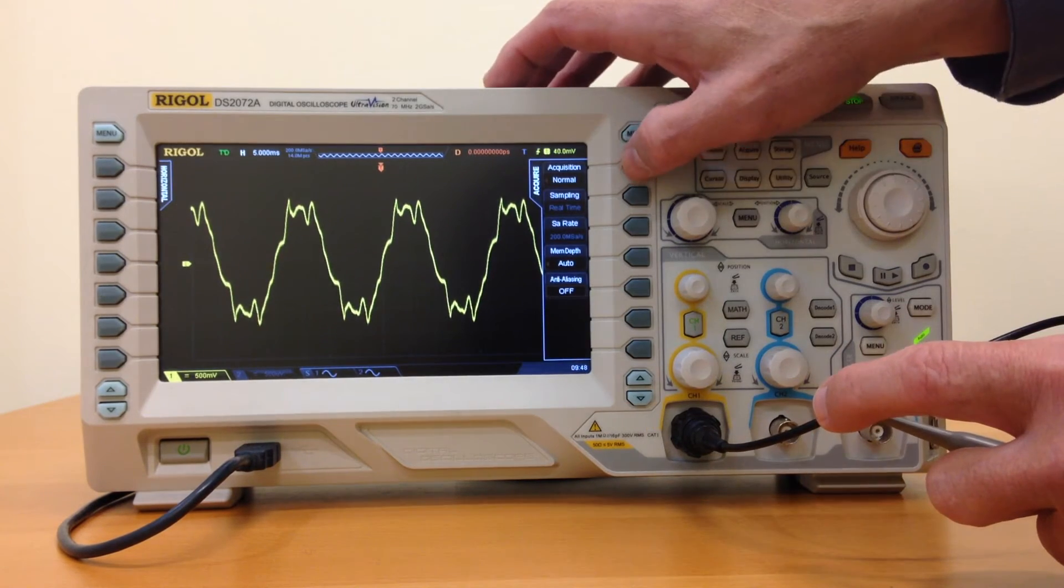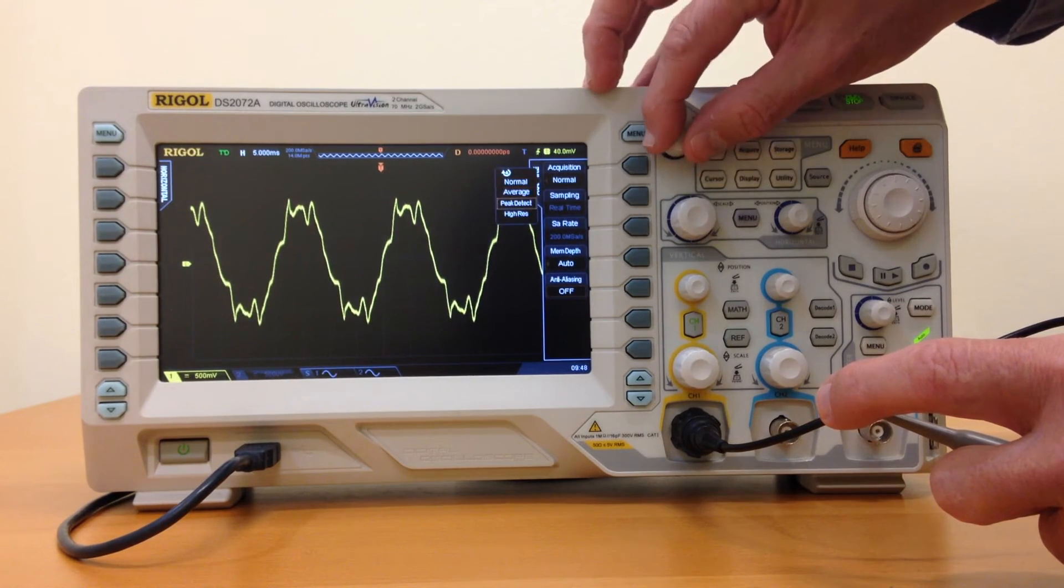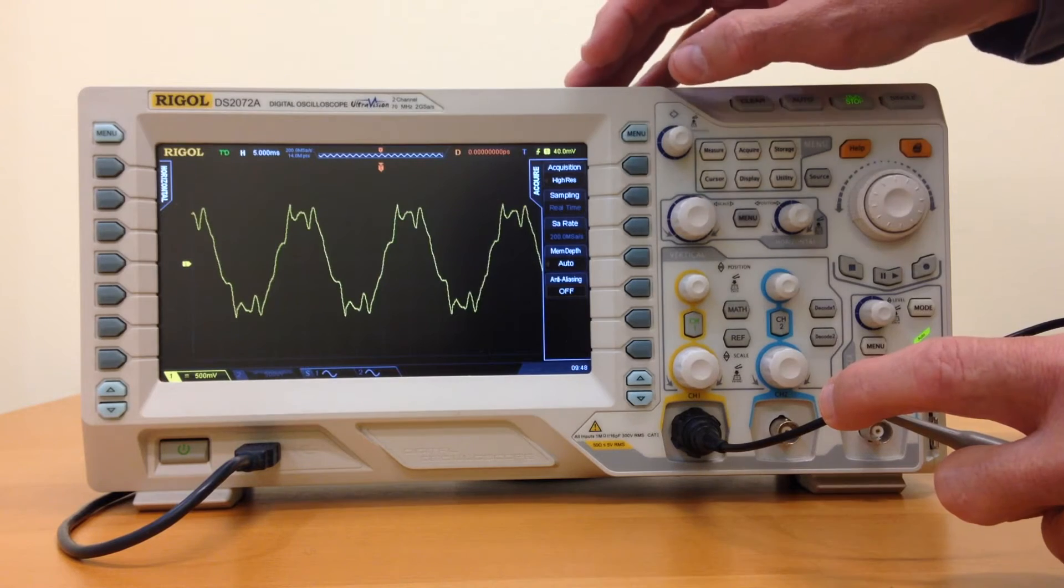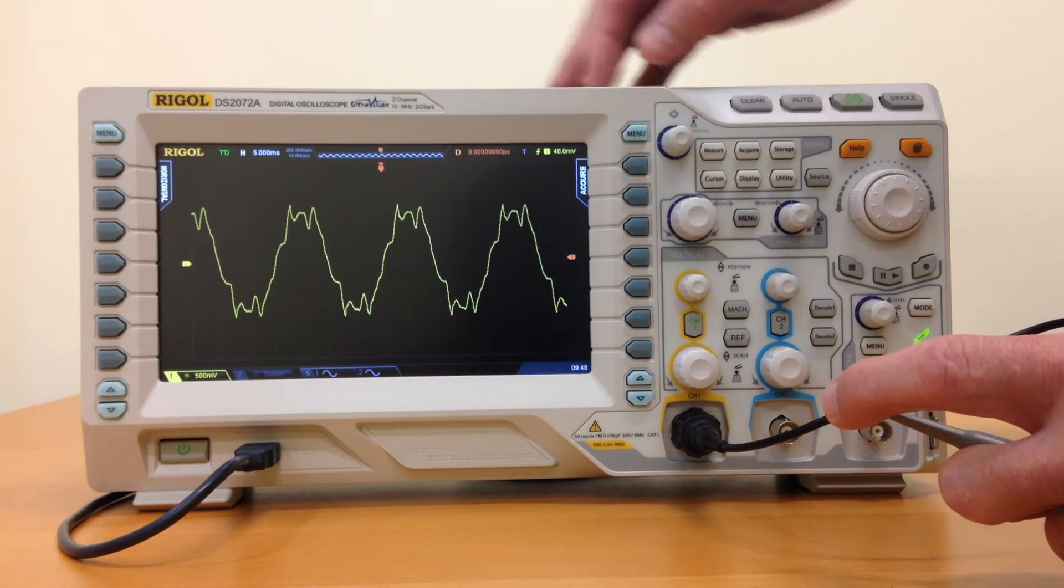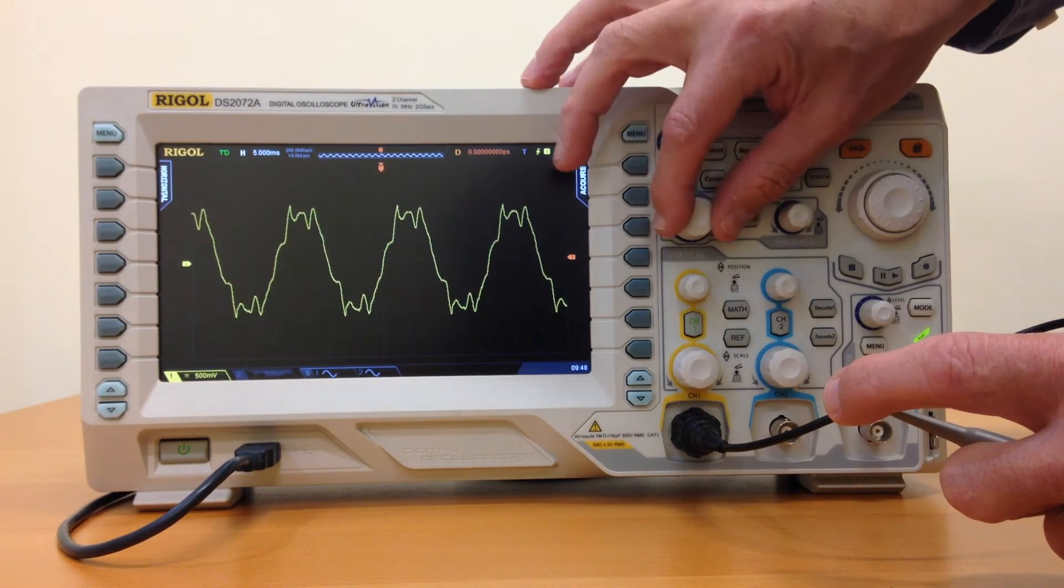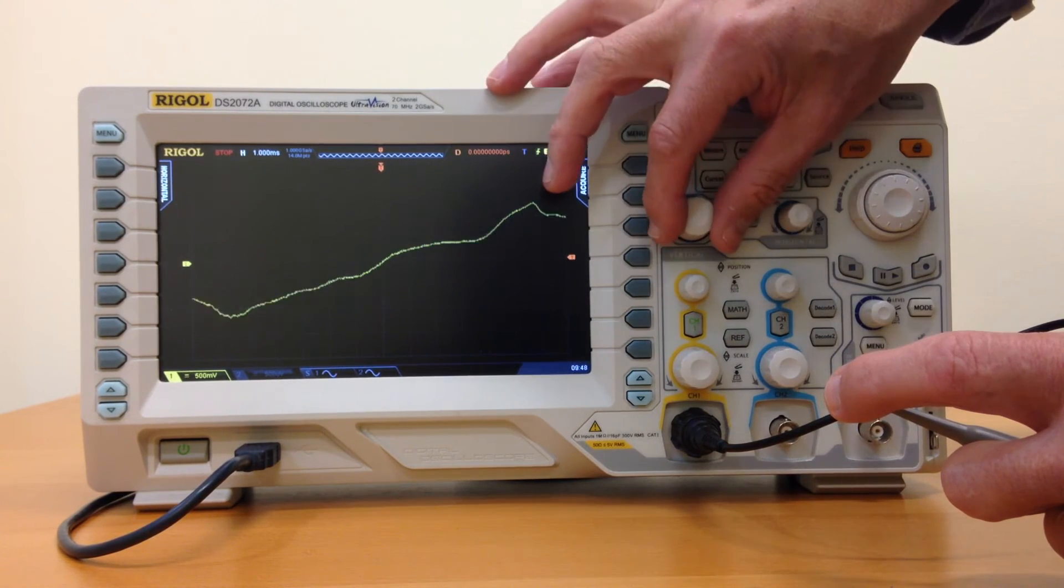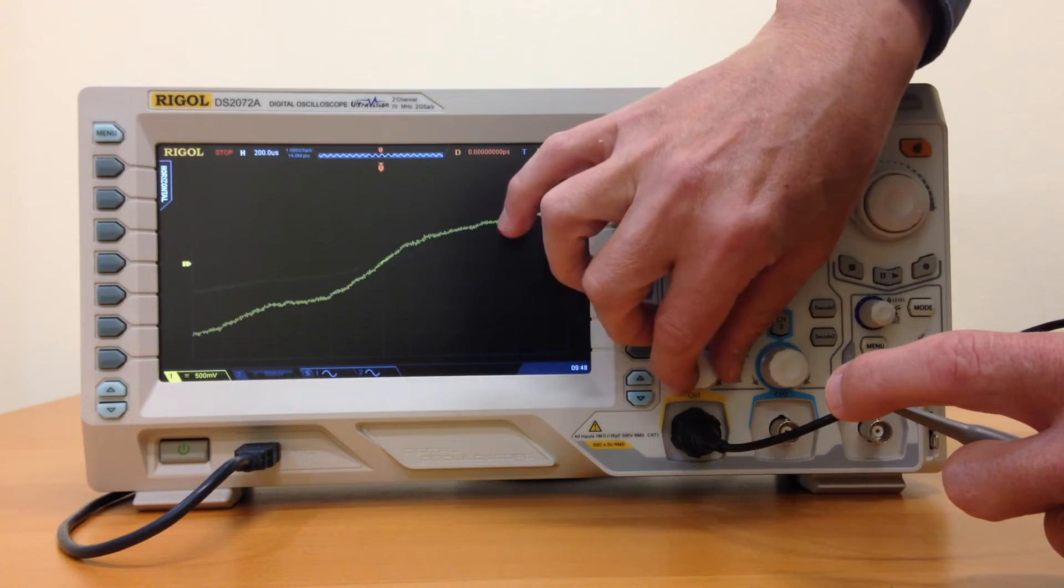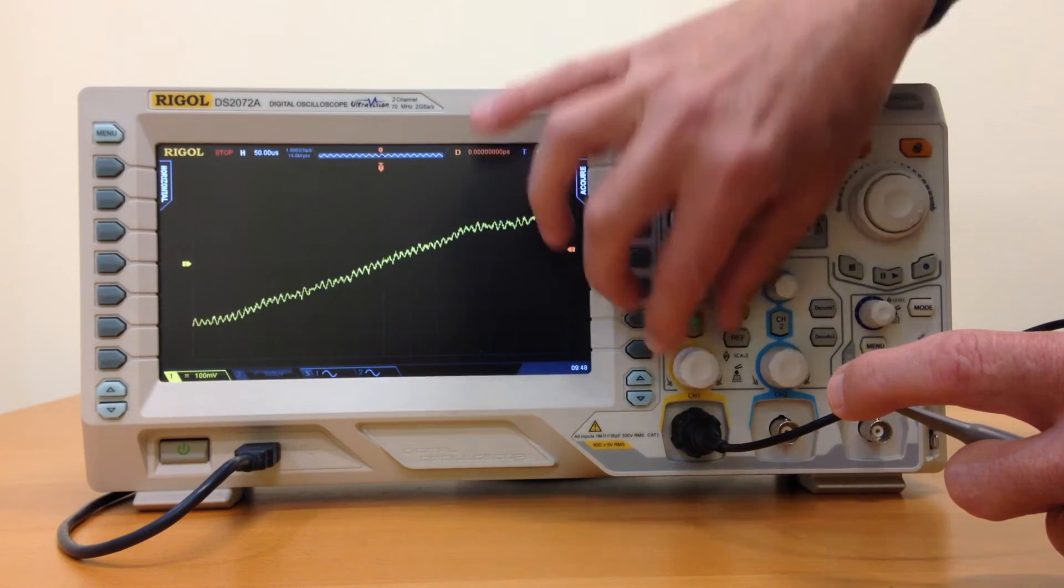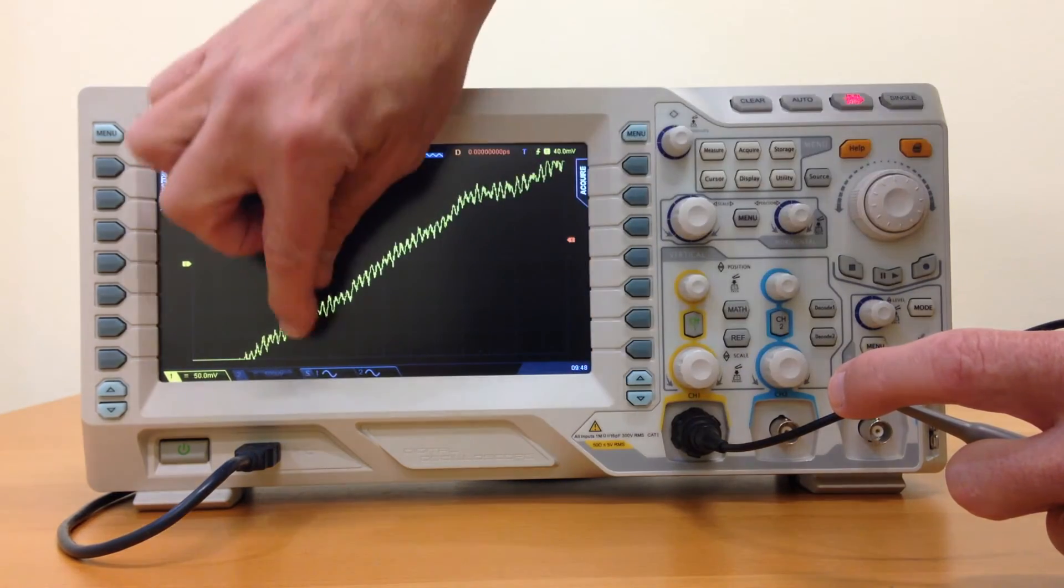Another use for the long record length is in high resolution mode. In this mode, we can enhance the resolution on the oscilloscope, and we can basically see very small signal changes.